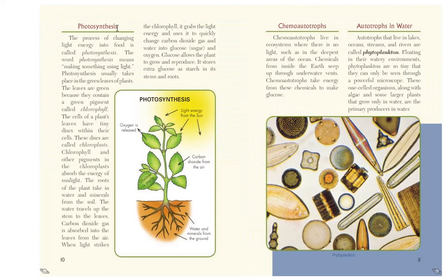Next up, photosynthesis — something we've learned about already. That's how plants make their own food. The process of changing light energy into food is called photosynthesis. The word photosynthesis means making something using light — photo meaning light, and synthesis meaning making something by combining parts into a whole. Photosynthesis usually takes place in the green leaves of plants. The leaves are green because they contain a green pigment called chlorophyll. The cells of a plant's leaves have tiny discs within them called chloroplasts. Chlorophyll and other pigments in the chloroplasts absorb the energy of sunlight. The roots take in water and minerals from the soil, water travels up the stem to the leaves, and carbon dioxide is absorbed from the air. When light strikes the chlorophyll, it grabs the light energy and uses it to change carbon dioxide gas and water into glucose and oxygen. Glucose allows the plant to grow and reproduce, and it stores extra glucose as starch in its stems and roots.